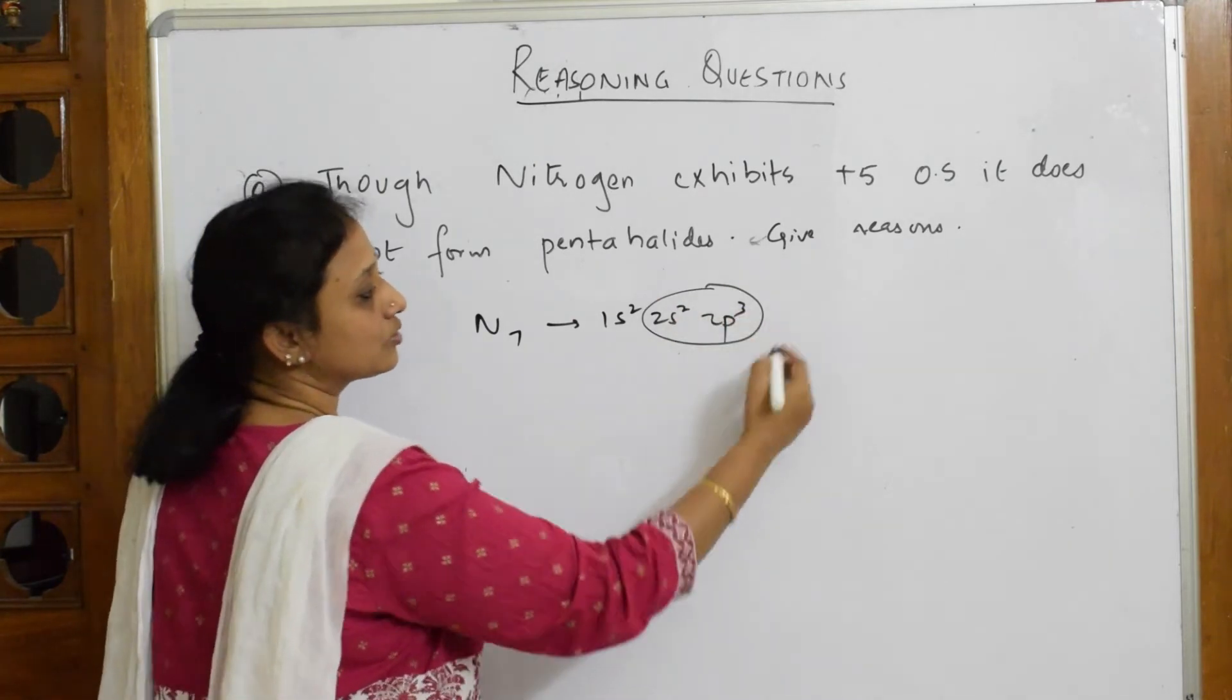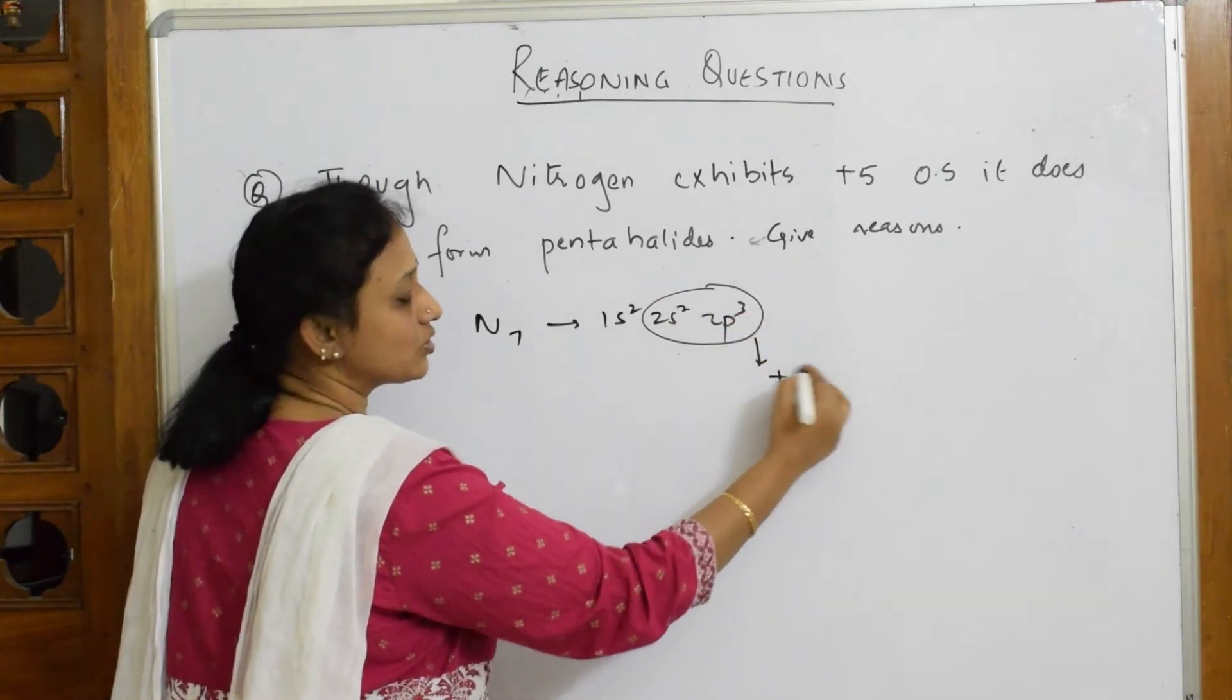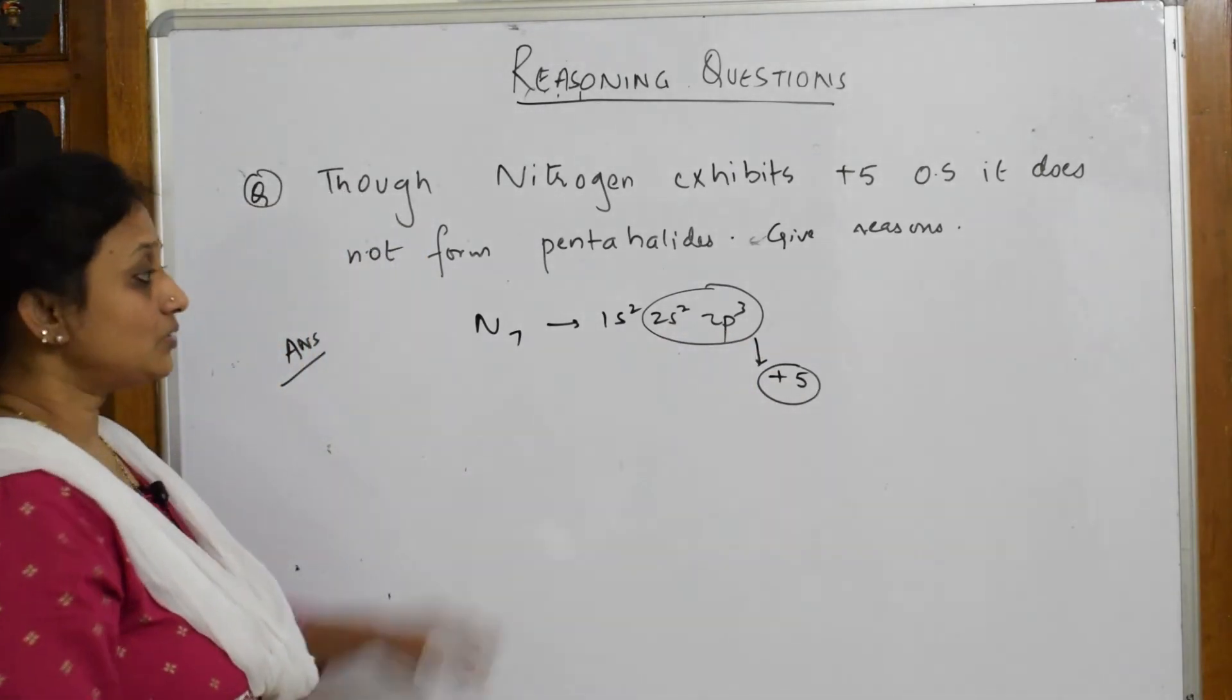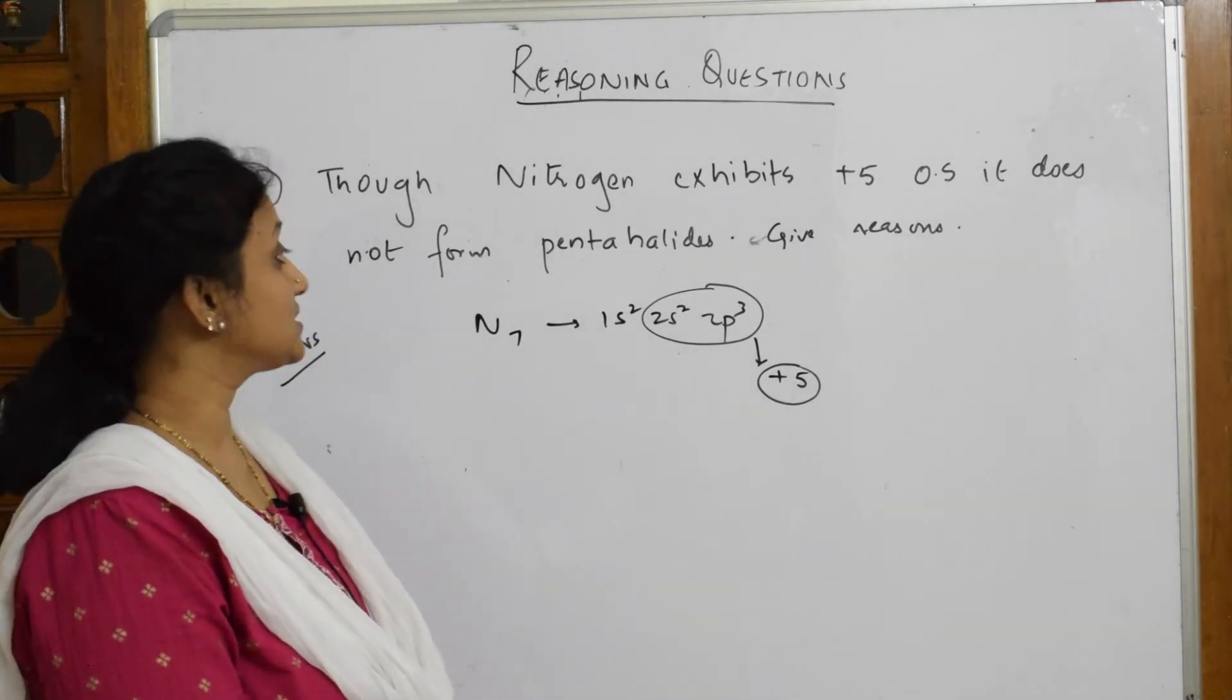It can show an oxidation state of +5 by losing all five electrons and attaining stable configuration. Though it has +5 oxidation state, it is not forming pentahalides.